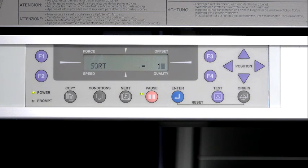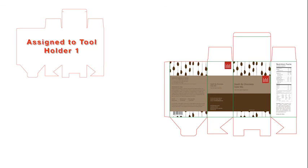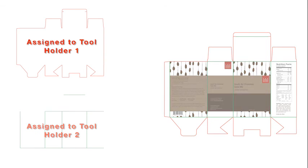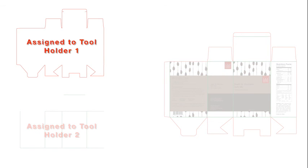Mode 1 takes the lines that are assigned to a certain tool number and groups them together. In other words, it groups all the lines and objects assigned to tool holder 1, and then groups all the lines and objects assigned to tool holder 2. It will then cut all the objects assigned to tool holder 1 at the same time, then it will cut all the objects assigned to tool holder 2 at the same time.